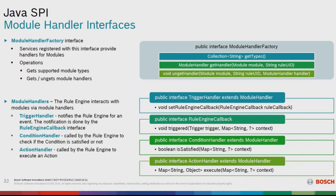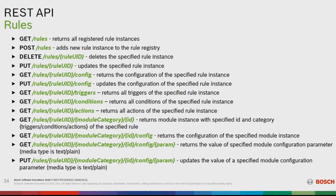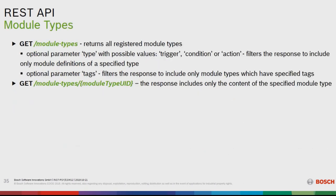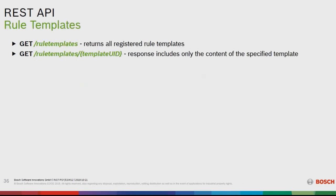There is also a REST API. You can call GET on rules to return all registered rule instances, add new rules, and so on — all using the REST API with JSON. The same applies for module types and rule templates.